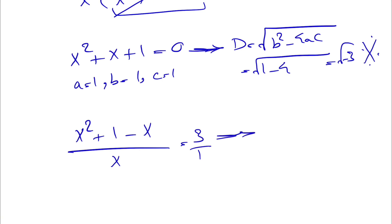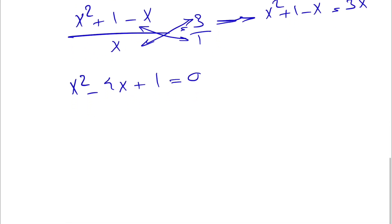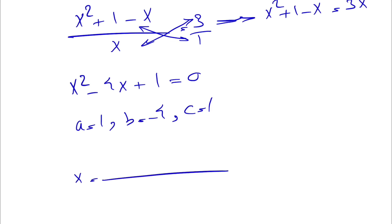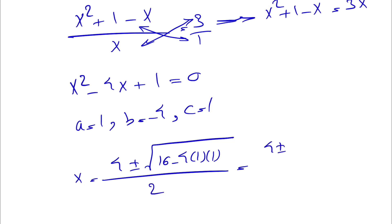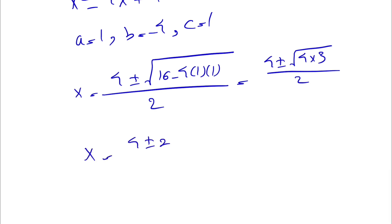Multiplying both sides by x gives x squared plus 1 minus x equals 3x, so x squared minus 4x plus 1 equals 0. Applying the quadratic formula with a equals 1, b equals minus 4, c equals 1: x equals (4 plus or minus the square root of 16 minus 4) divided by 2, which is (4 plus or minus the square root of 12) divided by 2, simplifying to 2 plus or minus the square root of 3.